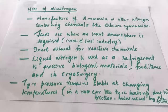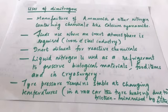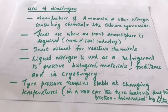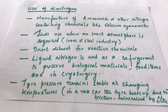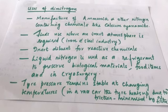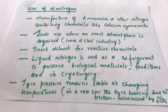The uses of dinitrogen: primarily it is used in the manufacture of ammonia and other nitrogen-containing chemicals like calcium cyanamide. It is also used where an inert atmosphere is required, such as in the iron and steel industry where oxygen is not desired. It acts as an inert diluent for reactive chemicals.